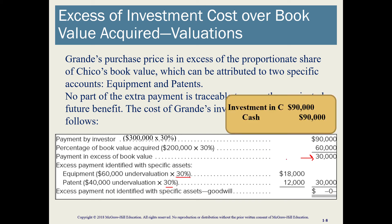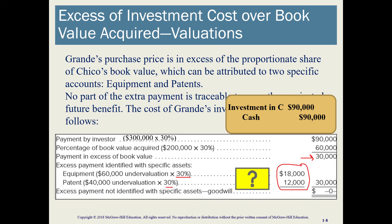The $90,000 journal entry debits Investment in Chico and, since we're not told otherwise, we assume we pay cash. So we credit cash for $90,000. That is our journal entry at acquisition. The question then becomes: what happens to this difference? It can't just sit on the Investment in Chico account forever, because these are assets that are actually being used.